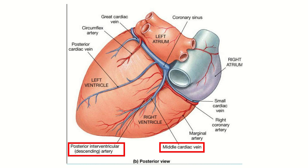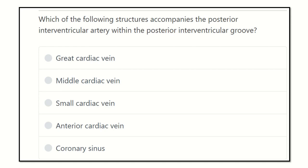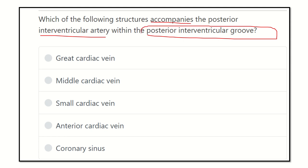Welcome to another question analysis session for the MRCS exam. The question asks: which of the following structures accompanies the posterior interventricular artery within the posterior interventricular groove? The options are: great cardiac vein, medial cardiac vein, small cardiac vein, anterior cardiac vein, and coronary sinus. We need to find out which vein is present with the posterior interventricular artery.